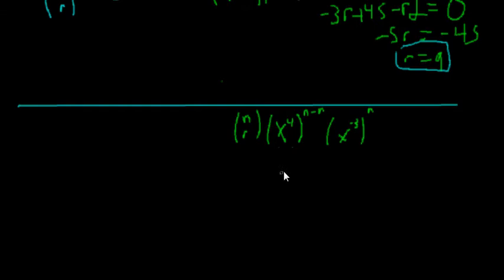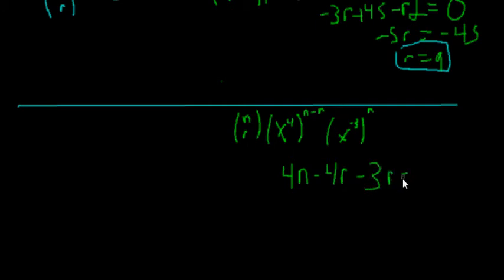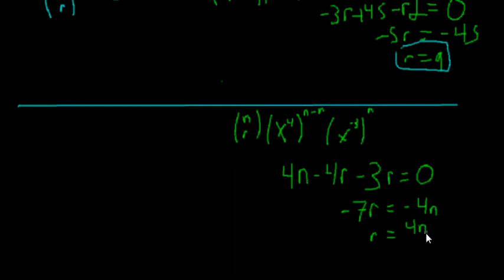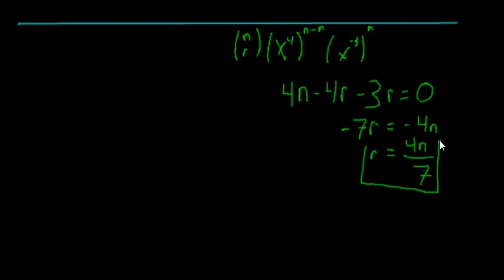So we set up the exponent equation: four times n minus r, which expands to four n minus four r, and then plus negative three r, all equal to zero. That gives us minus seven r equal to minus four n, so r is equal to four n over seven.